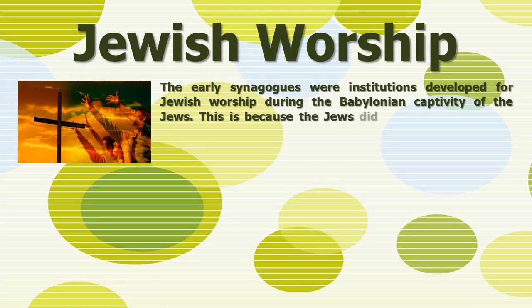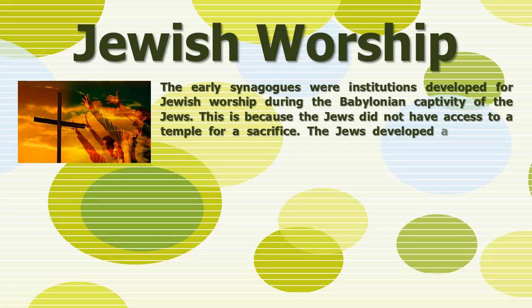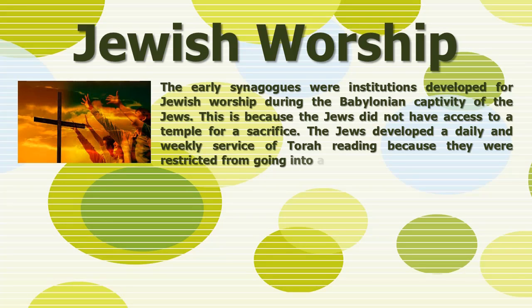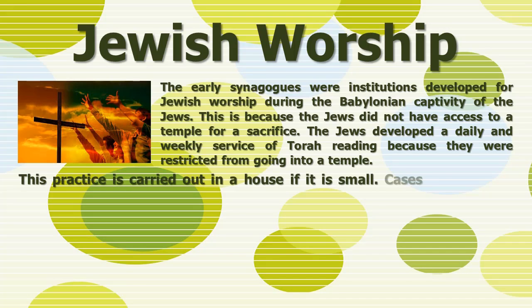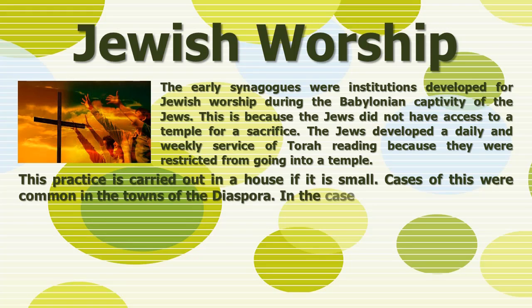The early synagogues were institutions developed for Jewish worship during the Babylonian captivity of the Jews. This is because the Jews did not have access to a temple for sacrifice. The Jews developed a daily and weekly service of Torah reading because they were restricted from going into a temple. This practice is carried out in a house in smaller cases, which were common in the towns of the diaspora.